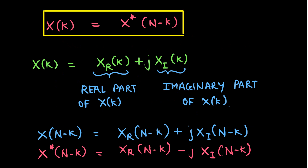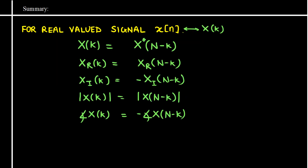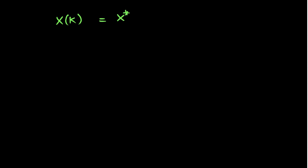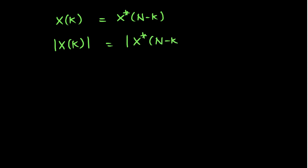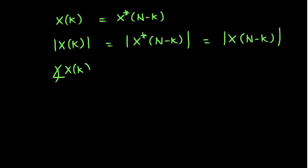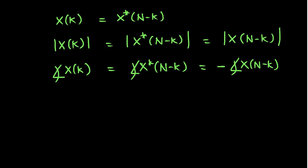Now let us consider the magnitude and phase. We have X(k) equal to X*((N-k)). Taking the magnitude, mod of X(k) is equal to mod of X*((N-k)), which equals mod of X((N-k)). And considering the angle of X(k), that is equal to the angle of X*((N-k)), which is equal to the negative of the angle of X((N-k)).